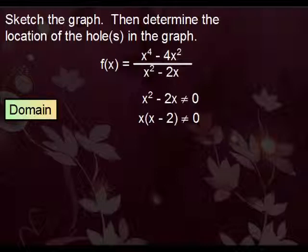And now we use the zero product rule. The zero product rule simply states that either this is zero or this is zero. For the first one, we get x cannot be zero. For the second one, we get that x cannot be 2. So that's our domain. All real numbers except zero and two.